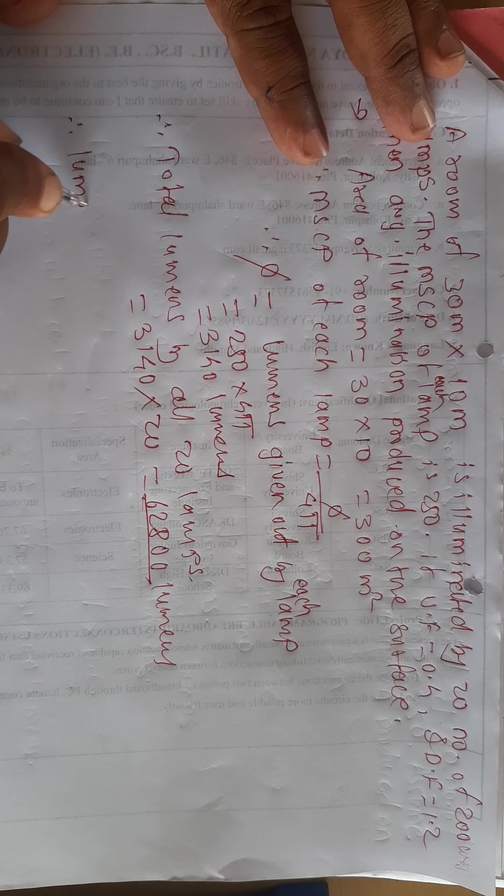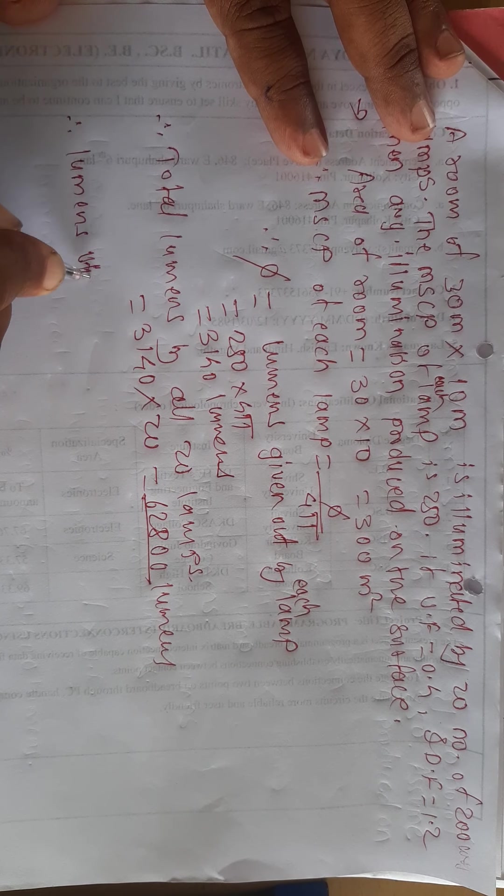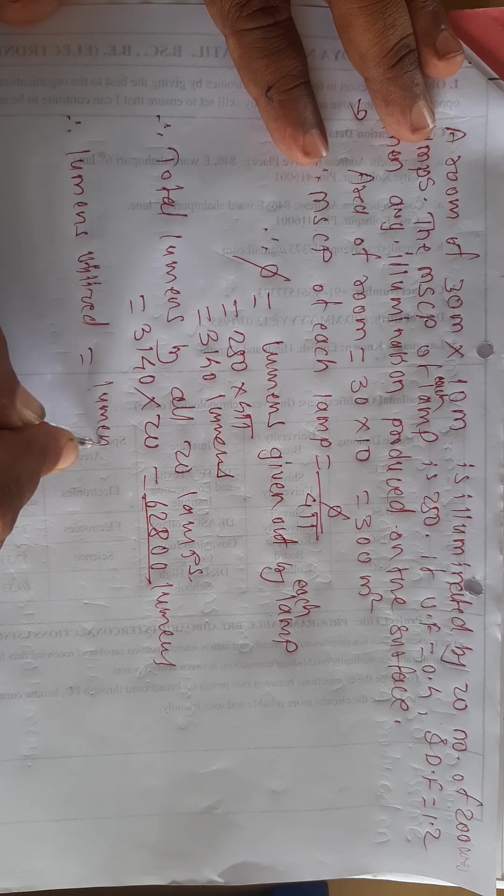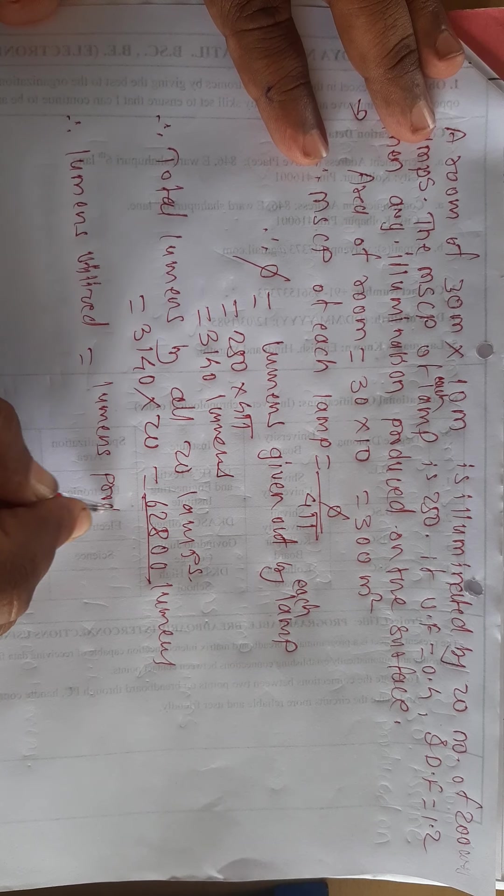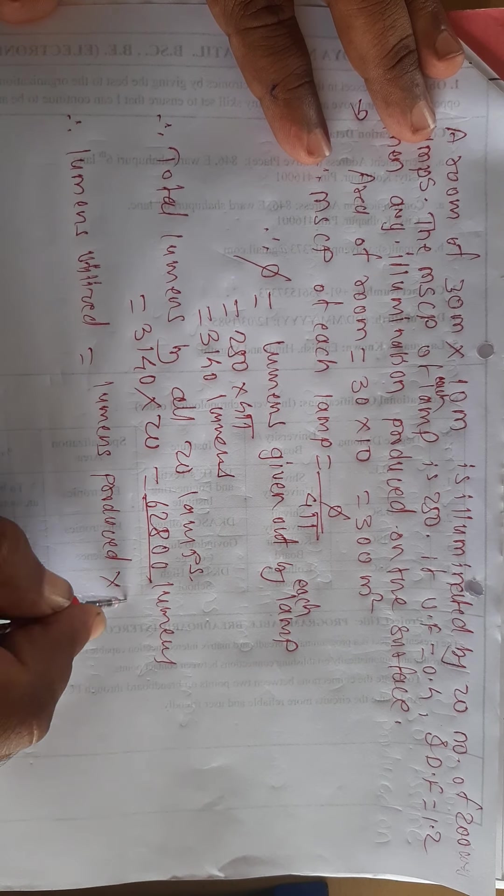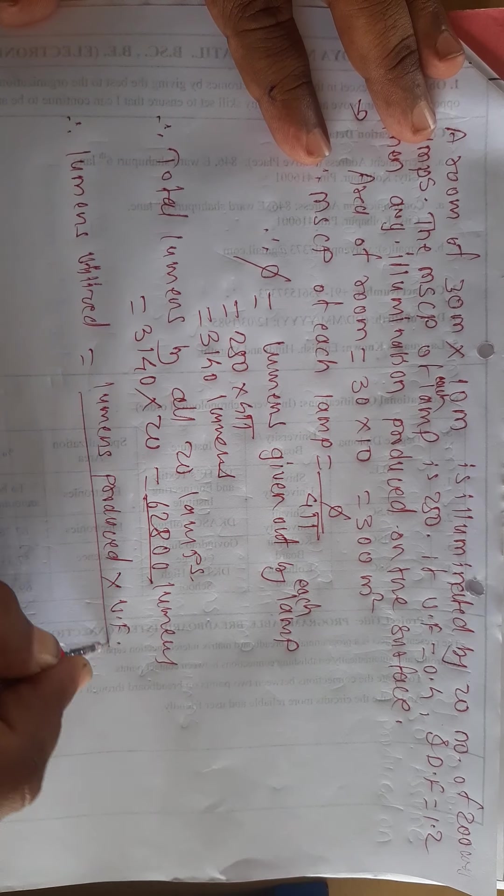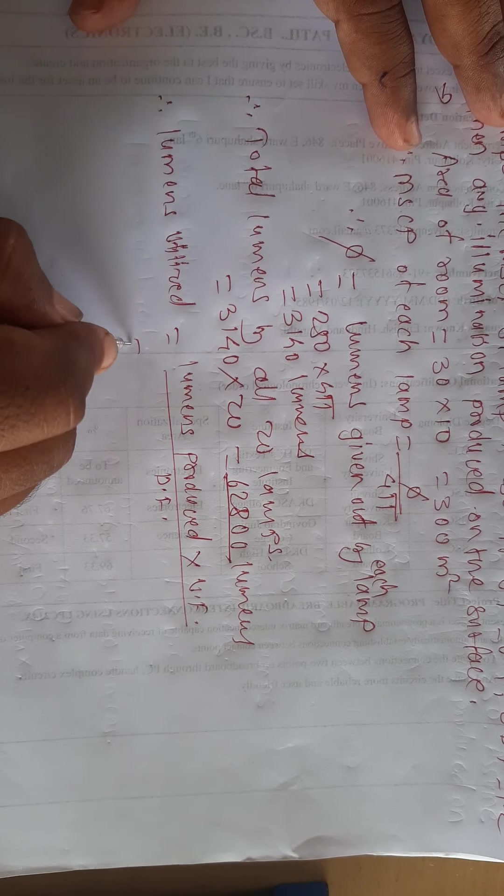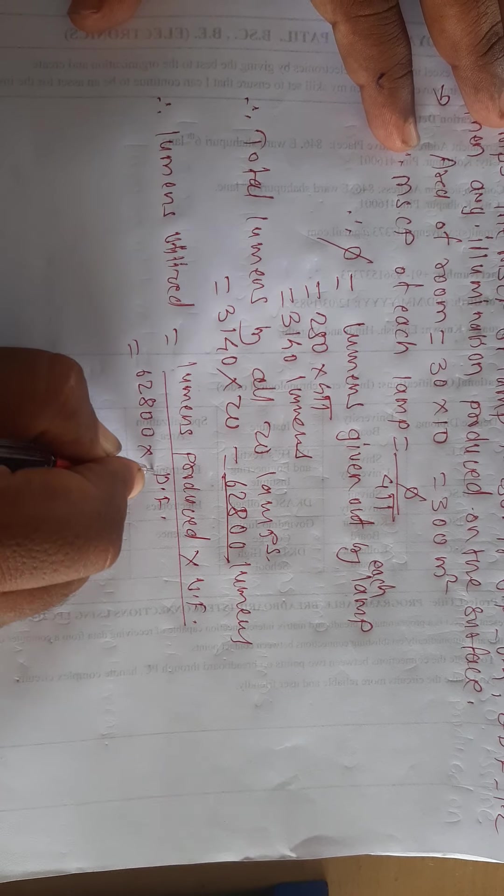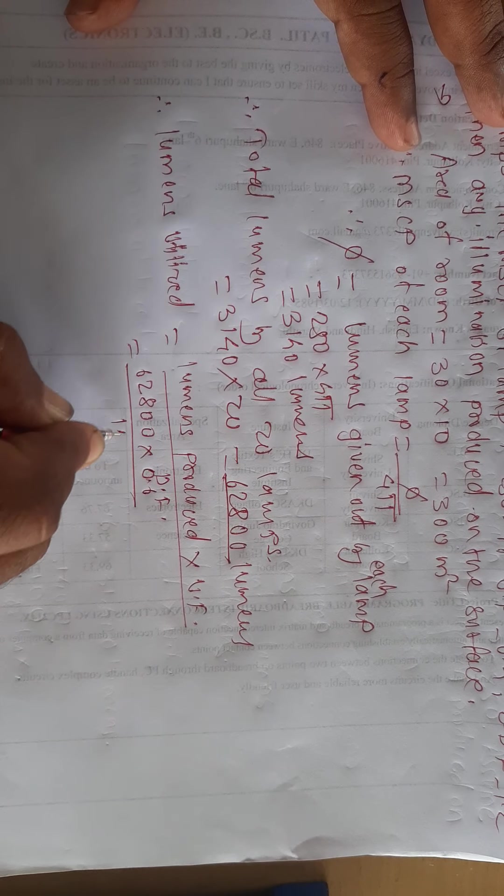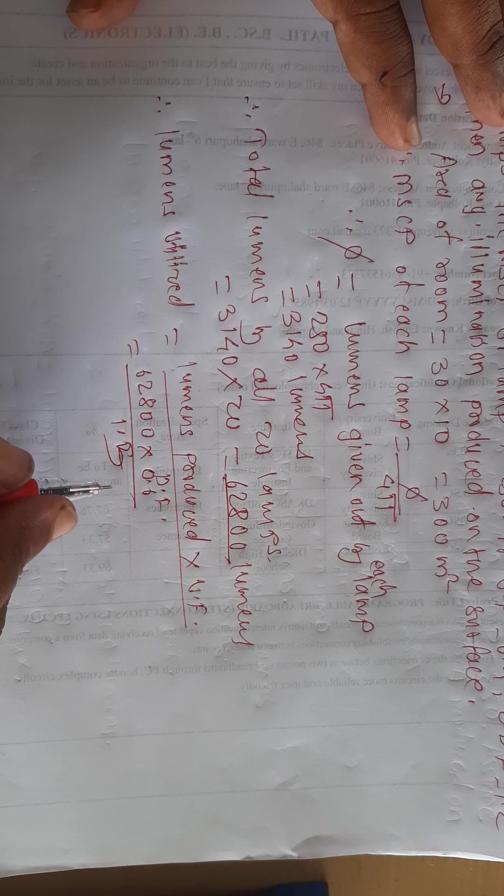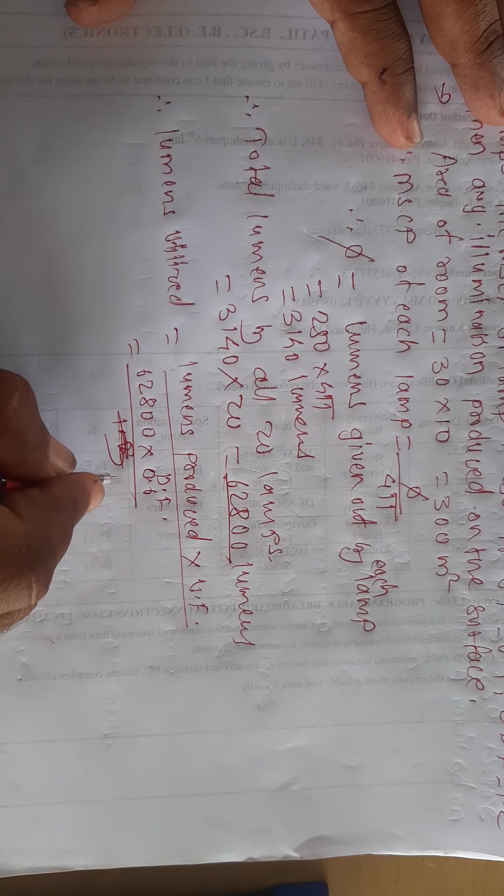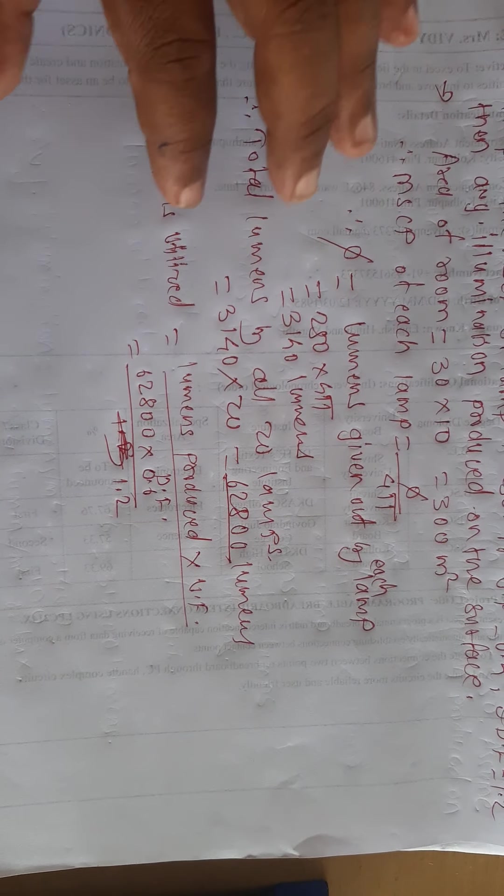Therefore lumens utilized, which is equal to lumens produced into utilization factor divided by depreciation factor: 62,800 into 0.6 divided by 1.2.